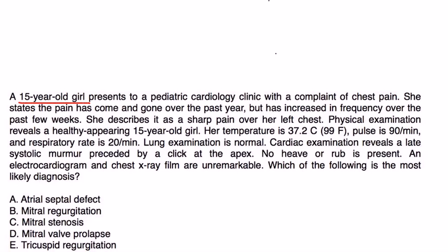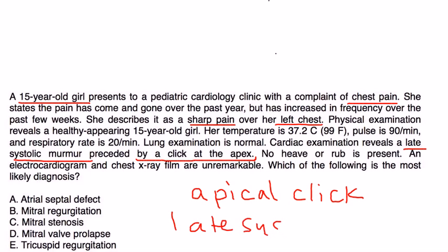A 15-year-old girl presents to a pediatric cardiology clinic complaint of chest pain. She states that the pain has come and gone over the past year, but has increased in frequency over the past few weeks. She describes it as a sharp pain over her left chest. Physical exam reveals a healthy, appearing 15-year-old girl. Temperature is 99, pulse 90, respiration is 20. Lung exam normal. Cardiac exam reveals a late systolic murmur preceded by a click at the apex. No heave or rub is present. An electrocardiogram and chest x-ray are unremarkable. Which of the following is most likely the diagnosis? A click at the apex, or an apical click, whichever way you want to refer to it, followed by a late systolic murmur is classic for mitral valve prolapse. And combined with chest pain in a 15-year-old girl during a cardiology visit is actually a very characteristic scenario. So, it's D.